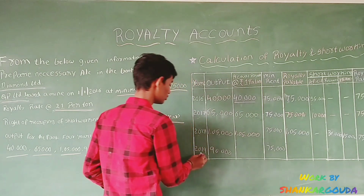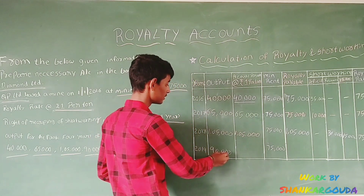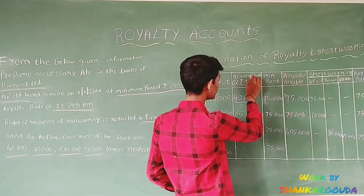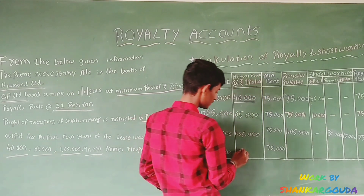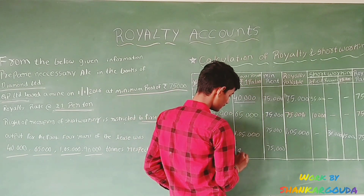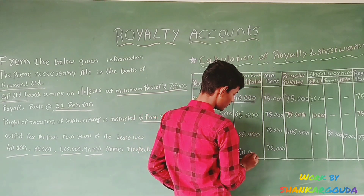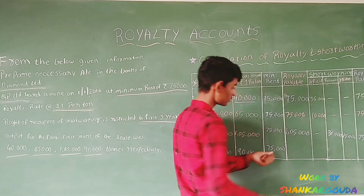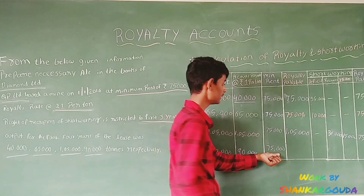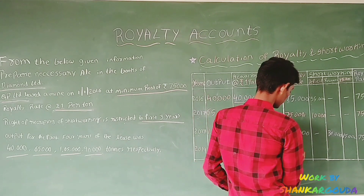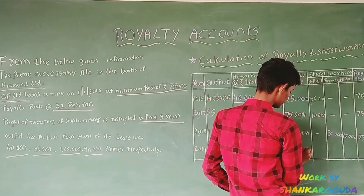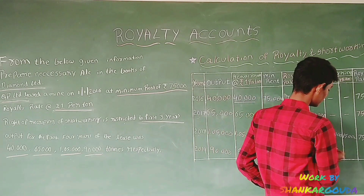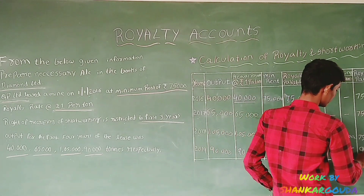In the year 2019, output is 90,000 and the royalty payable is 90,000, meaning he has to pay 90,000 to the owner. The minimum rent is 75,000 but the amount paid is 90,000. There is no short working deficit and no recoupment required.